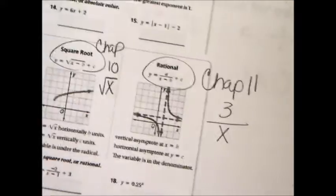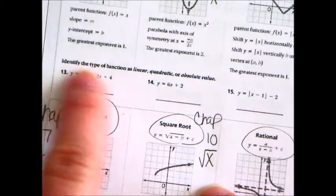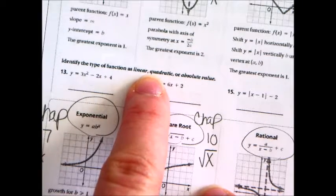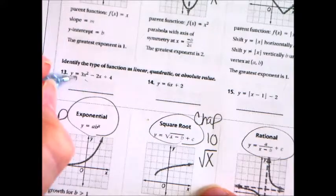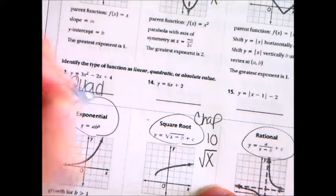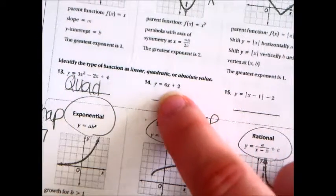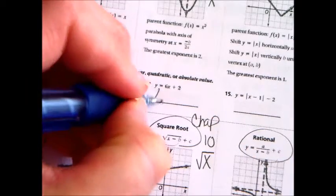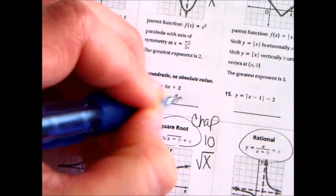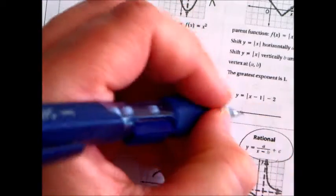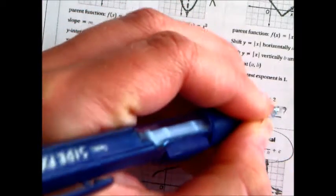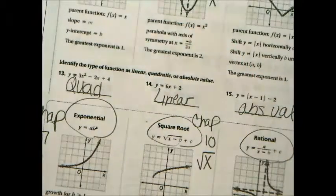And, so, something we have to understand is what happens to certain functions with different types of numbers. But, let's see. It says, identify the type as linear. We can do this. So, this one here, see the x squared? That automatically means it's quadratic. See this one here? How it's just like plain old x. It just says 6x. That's linear. And, see how that one's in absolute value? That means it's absolute value. That wasn't bad, was it? You can do that.